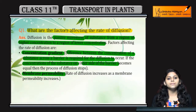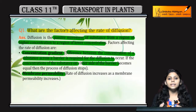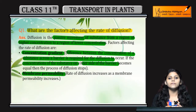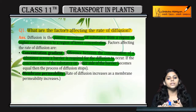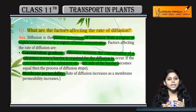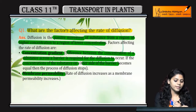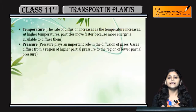The next factor is membrane permeability — this means how much the membrane allows a substance to enter. If the membrane's permeability is higher, more movement and more diffusion can occur.